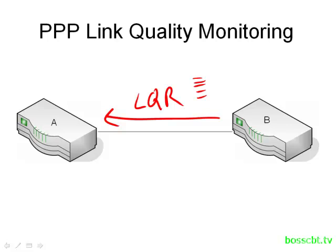If the number of error frames gets too high — and you can configure a percentage as a threshold — if that threshold is crossed, the routers can decide that this circuit is not performing well at all. It's past the threshold, meaning too many errors are occurring, and they'll go ahead and shut the circuit down.